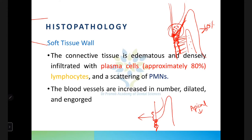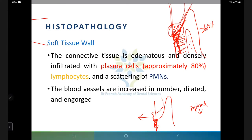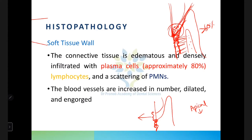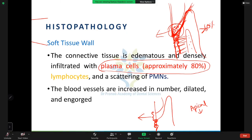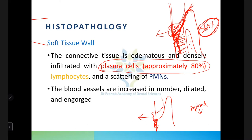In histopathology, we study the soft tissue wall and the hard tissue wall of the pocket. In the soft tissue wall, the connective tissue is edematous and infiltrated with plasma cells — approximately 80 percent of the cells are plasma cells. Note that during pocket formation PMNs exceed 60 percent, but after pocket formation plasma cells predominate. There are also lymphocytes and PMNs present.